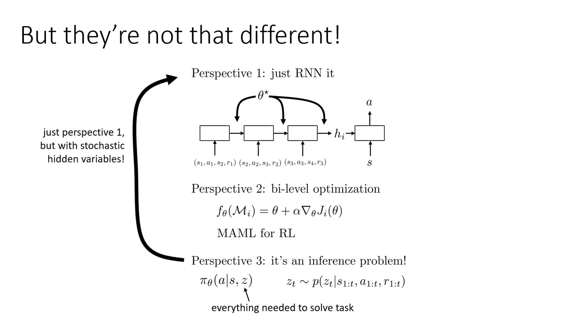But let's talk about how these things are actually similar to each other. The inference procedure is really just like the RNN procedure, but with stochastic variables. So phi is basically Z. And the gradient-based approach can be instantiated as one of the other two just with a particular choice of architecture. In fact, you can actually develop a stochastic version of model agnostic meta-learning by adding noise to your gradients, and that will start looking a lot like the inference process. So they're actually pretty similar.